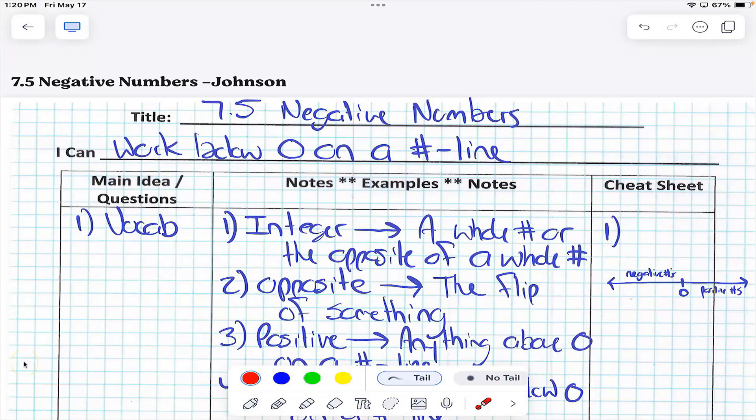Good afternoon, Ms. Johnson's class. Good afternoon, Mr. Connors. Can you guys—7.5 negative numbers—can you guys work below zero on a number line? Yes.